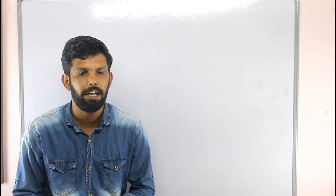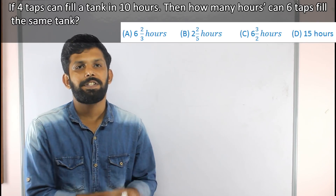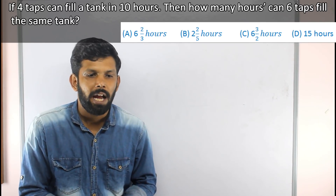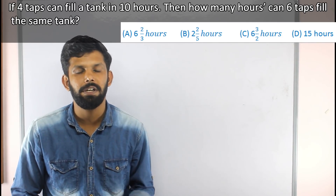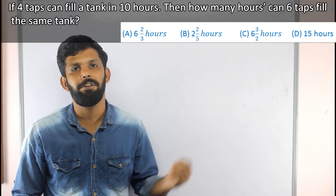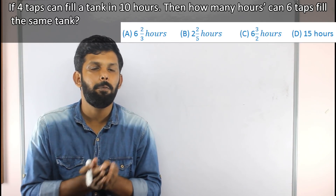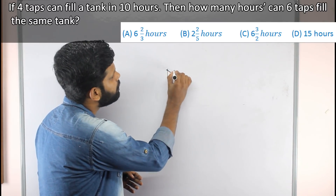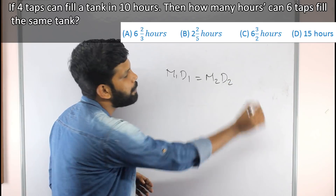Next question: If 4 taps can fill a tank in 10 hours, how many hours can 6 taps fill the tank? The options are: 6⅔ hours, 2⅖ hours, 6⅔ hours, and 15 hours. We apply the formula M1 × D1 equals M2 × D2, where the total multiplication product is equal on both sides. M1 is 4 taps, D1 is 10 hours, M2 is 6 taps.